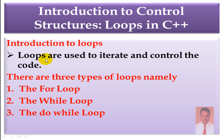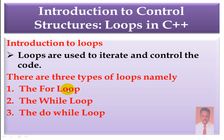What is a loop? Why do we want to use a loop? Loops are used to iterate and control the code. Whenever you want to repeat a piece of code a number of times, you want to use a loop. Also, if you wish to control a program, you can use a loop. There are three types of loops: the For Loop, the While Loop, and the Do While.